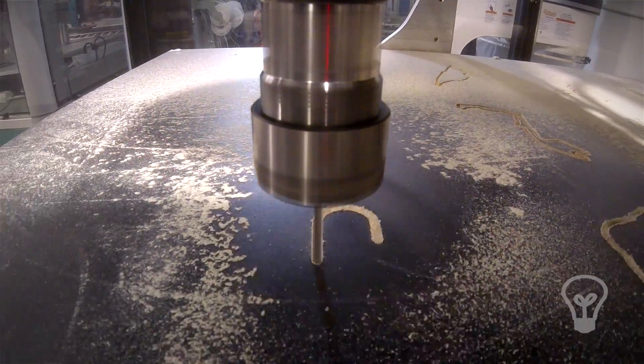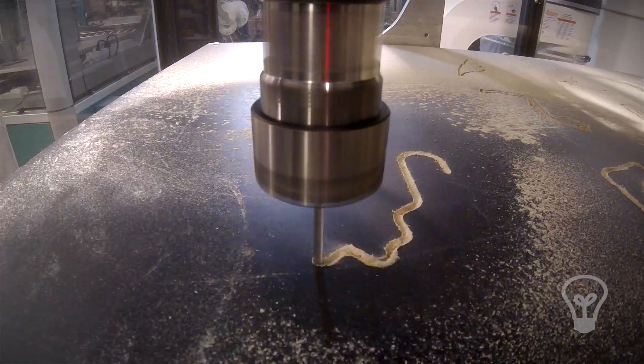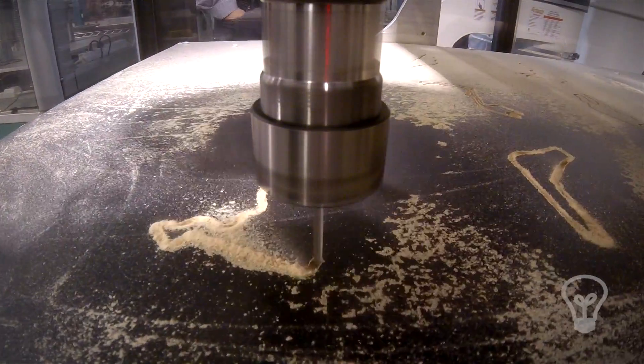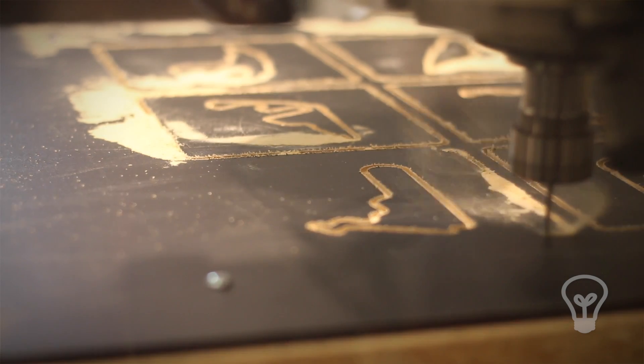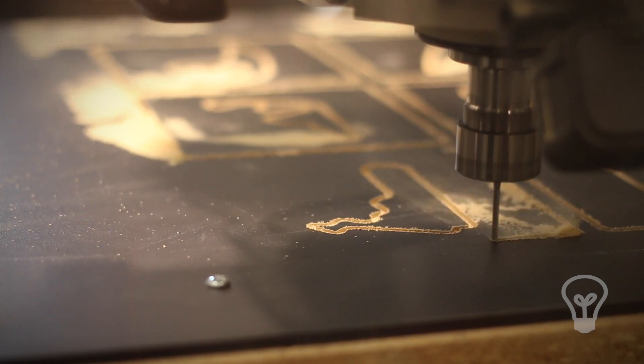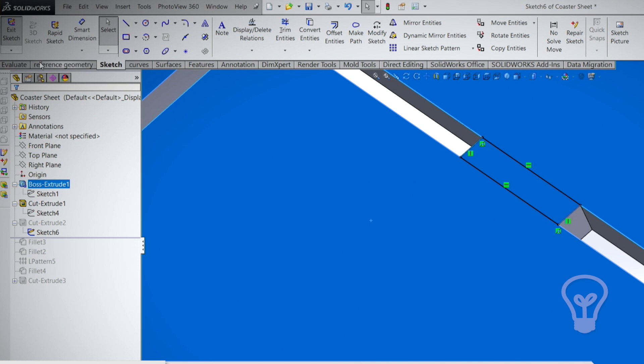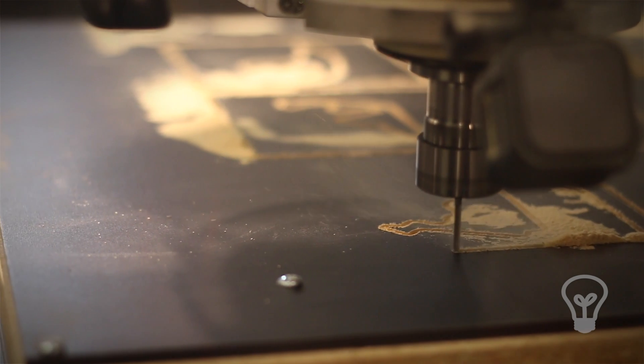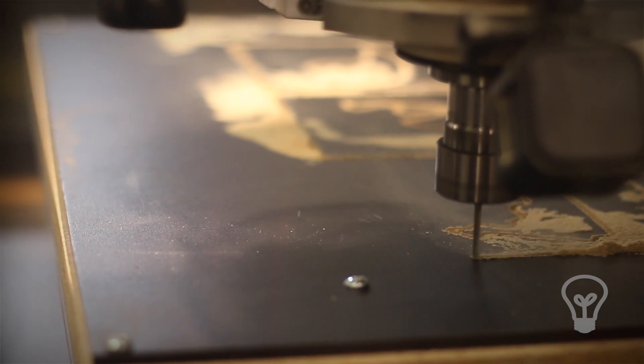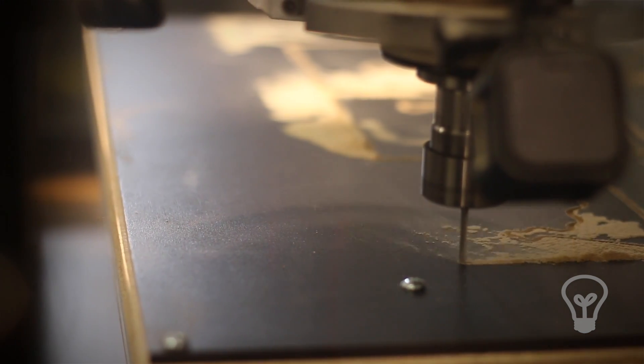And I believe this is our last track. What it should do next is it will go around and cut out the actual coasters now that the tracks are done. What we've done is we've designed tabs into each coaster so that they're held in place while it's cutting. If it did pop off, the problem is it would get caught in the cutter and would ruin the coaster.